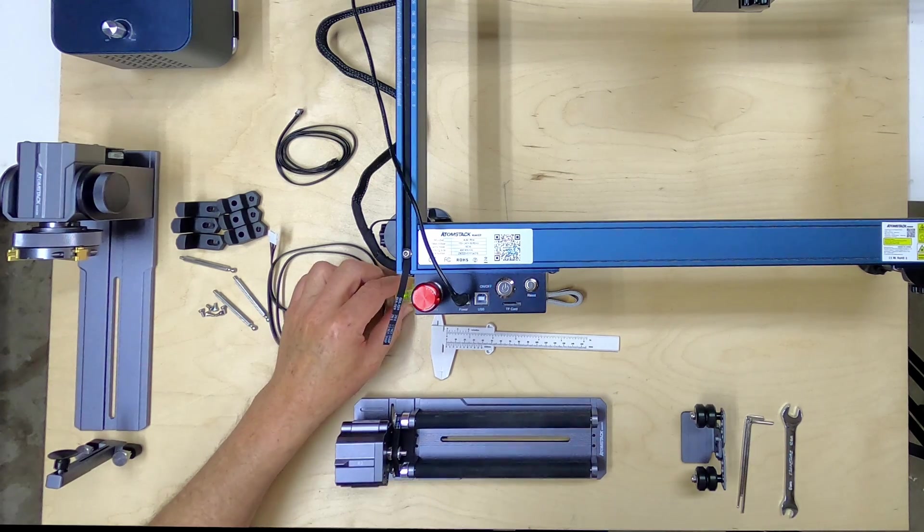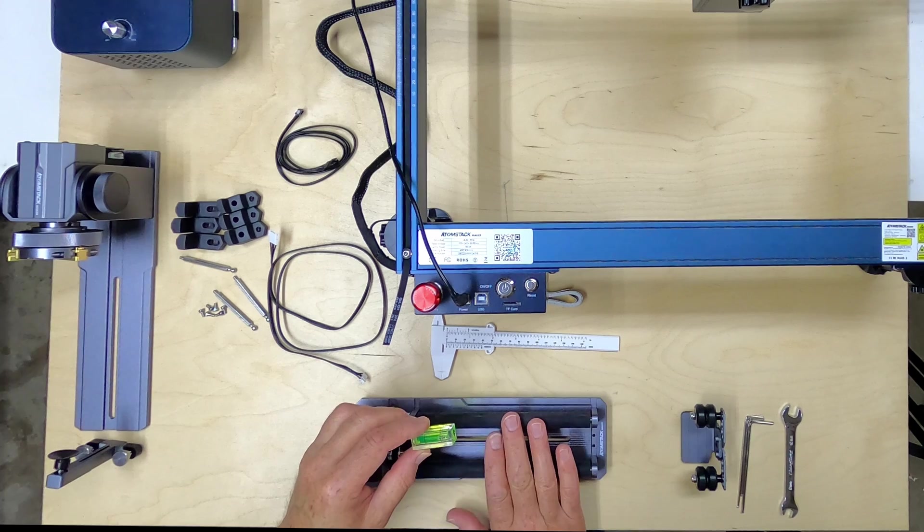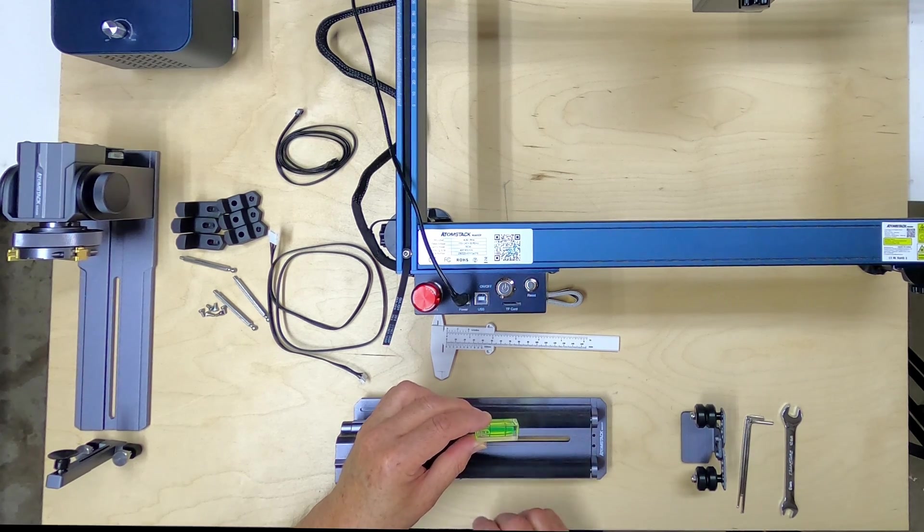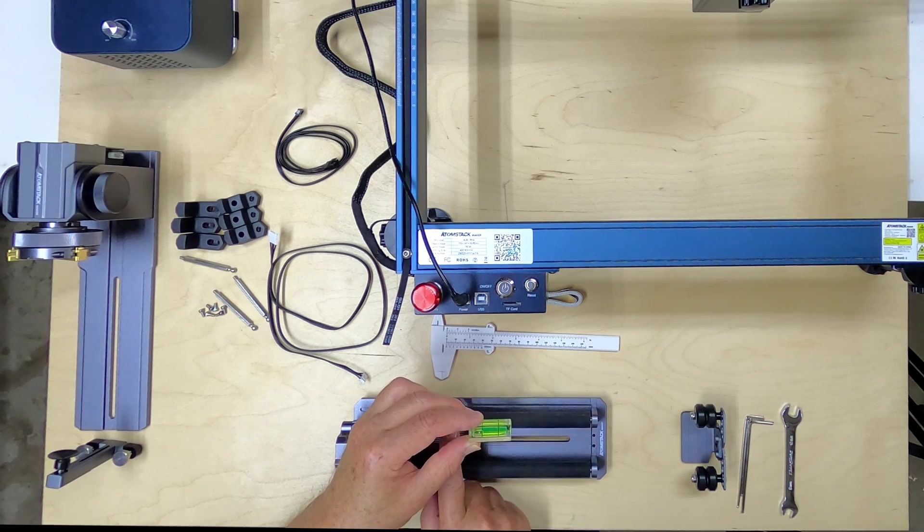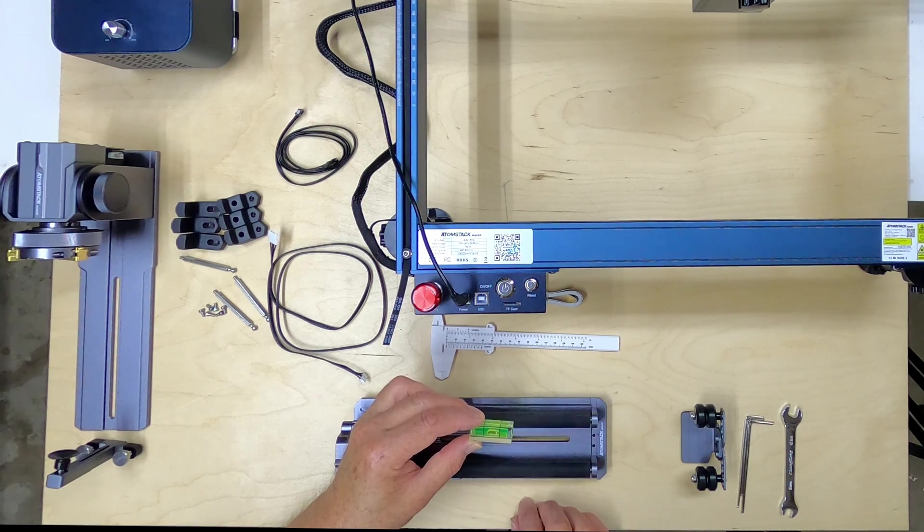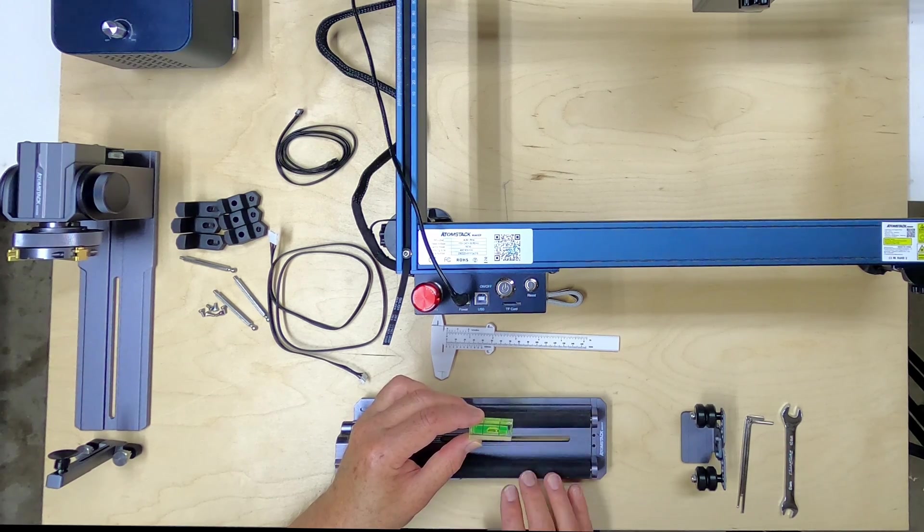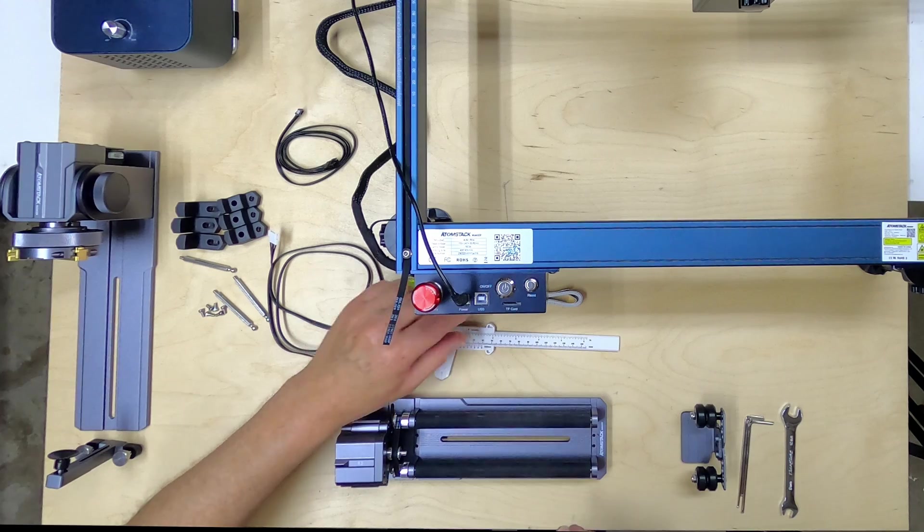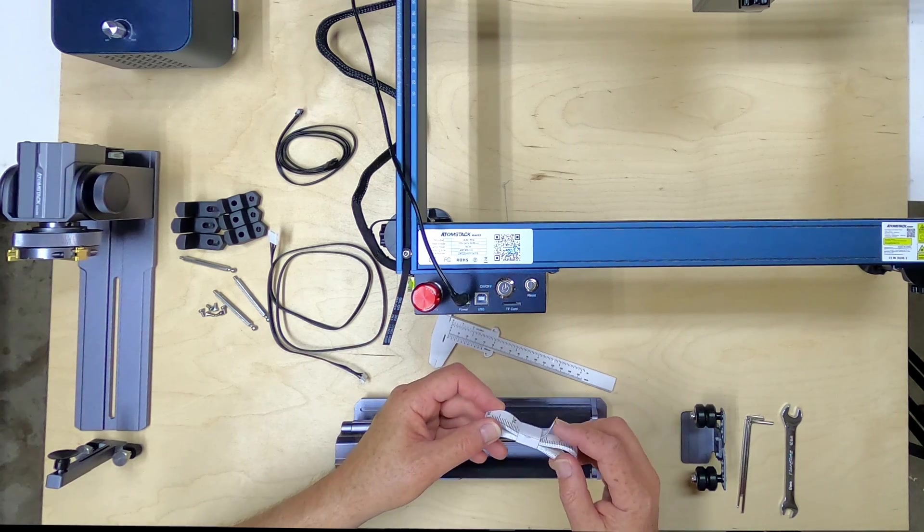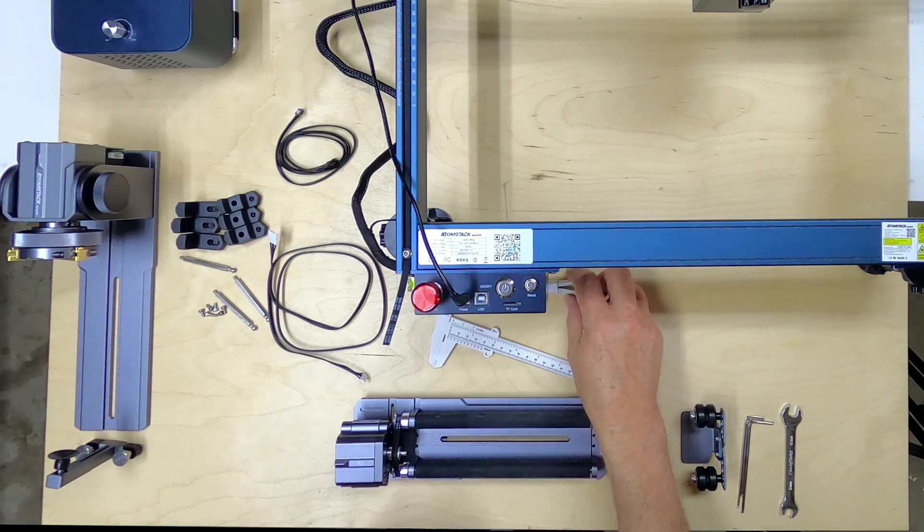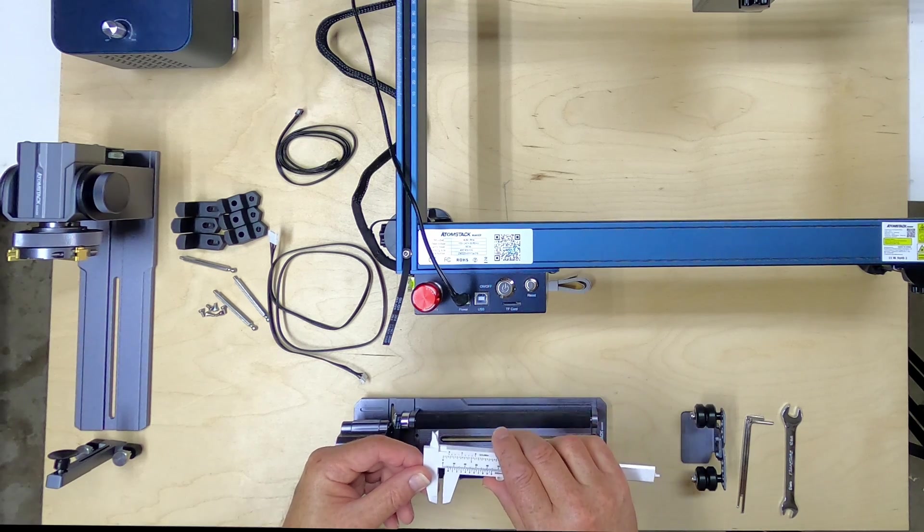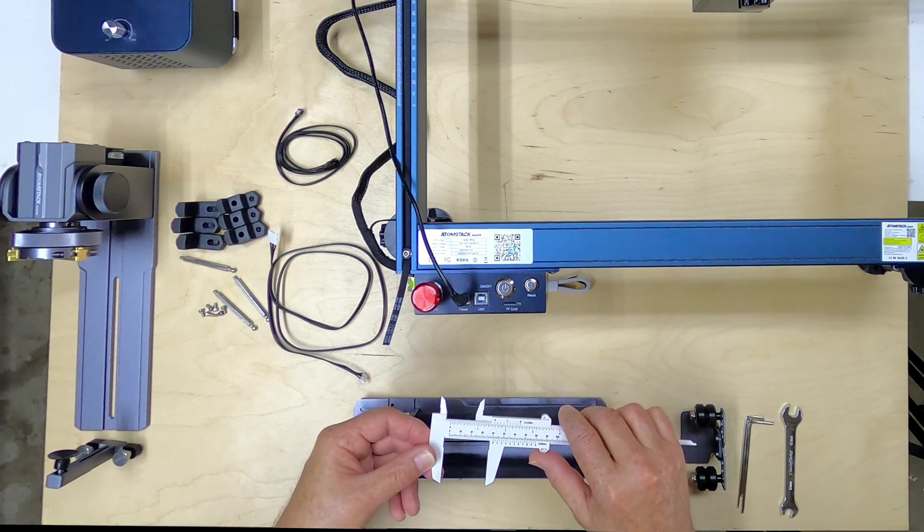It also comes with this small level so that when you put something in here you want it to be level, otherwise if you have it higher on this end you'll be burning more here than you would down here. So to keep it focused you need this piece you're going to burn to be level. Also comes with a flexible ruler in case you want to measure something, it's in both metric and imperial, and a small fairly cheap but no doubt better than nothing caliper.